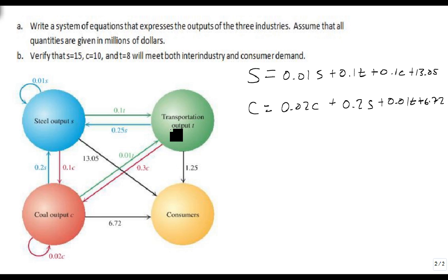Our transportation, again we're just looking at our output arrows, so t is equal to 0.25s plus 0.3c plus 1.25. Notice this one doesn't feed back on itself at all. And that's okay, sometimes they don't. They don't have any costs that are dependent on themselves.